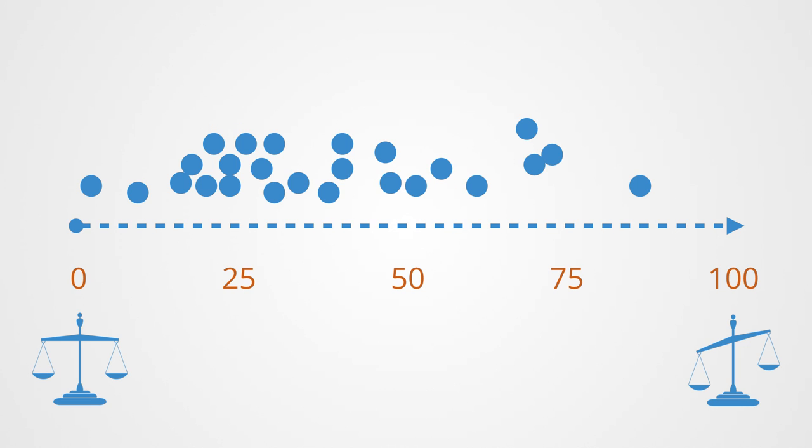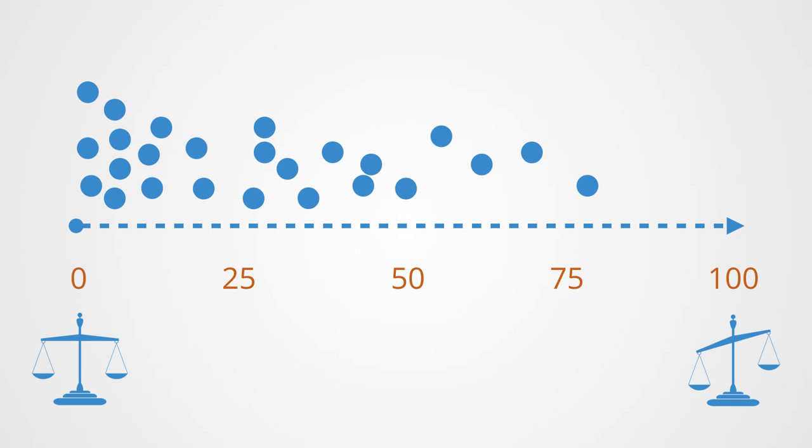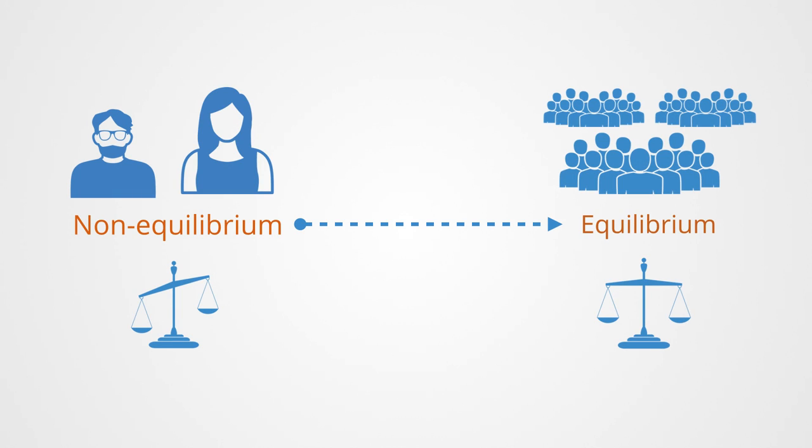However, over time as the game is iterated upon, the numbers chosen by people do move towards this equilibrium. Thus this method of equilibrium analysis tells us something about the statistical averages of the system, but not very much about behavior in the real world on the first iteration of the game.